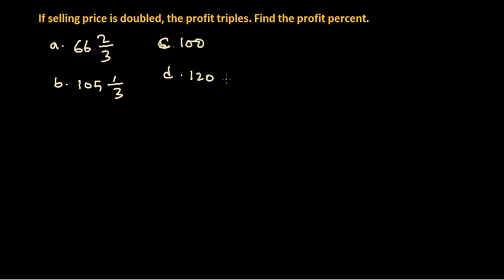Let's solve this problem. It is a very easy problem but involves a slight juggling of words. The question is: if the selling price is doubled, the profit triples — find the profit percent. You may wonder that no values are provided at all, so how can you get the answer?